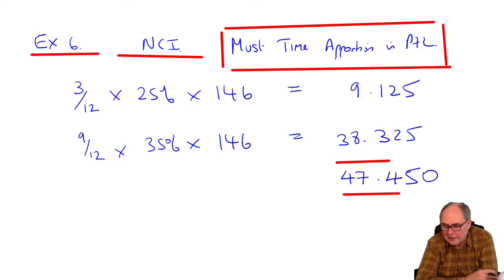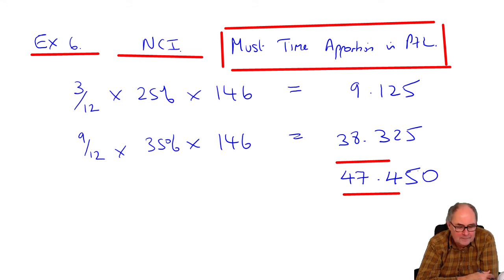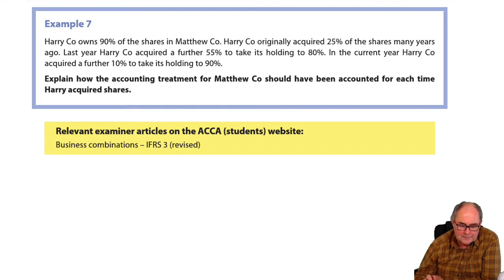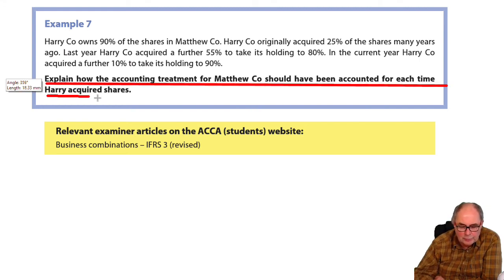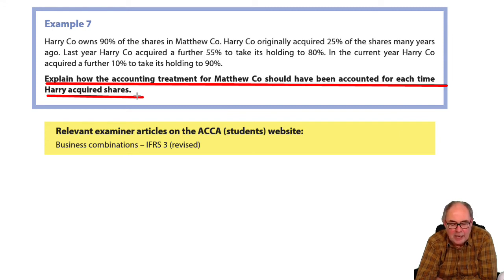Pause the recording again and have a look now at example 7. Some of you will be quite cross because there's no reference to any numbers at all, apart from the group structure. This is what you will be asked to do in the exam alongside the calculations. Just have a read of it for a moment and then listen to me again.